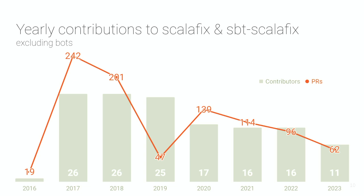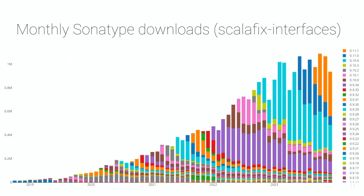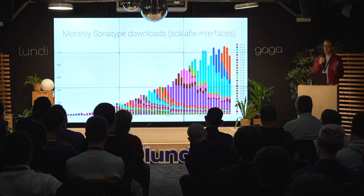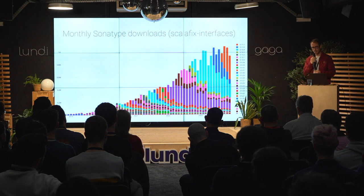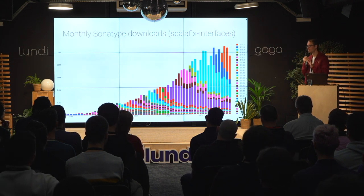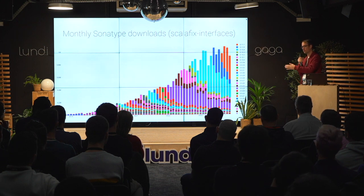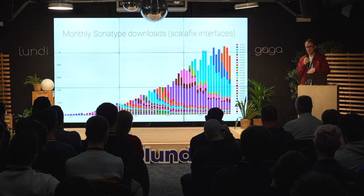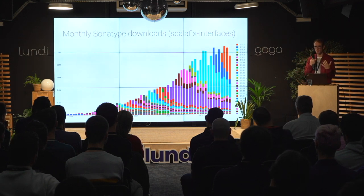The number of PRs per year is decreasing — last year there were 62 PRs excluding Dependabot and Steward PRs — and the number of unique contributors is also decreasing. There was a lot of foundation work in 2017–18, and now we're in a mature maintenance phase. Sonatype stats show monthly downloads by ScalaFix version: adoption really picked up around 2020. It takes about six months for half the community to adopt a new release.